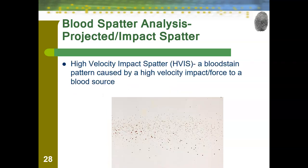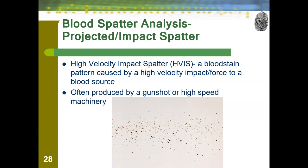And this is compared to high-velocity impact spatter — a bloodstain pattern caused by a high-velocity impact or force to a blood source. This is often produced by a gunshot or high-speed machinery. You can see we can barely see individual blood droplets anymore; the blood has become very small and very spread out because the high velocity has caused the blood to almost vaporize.